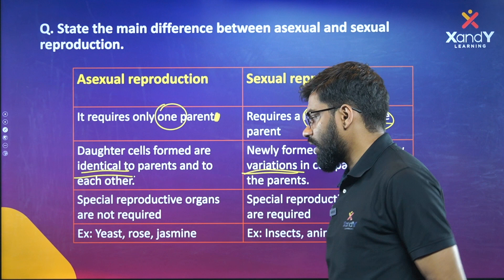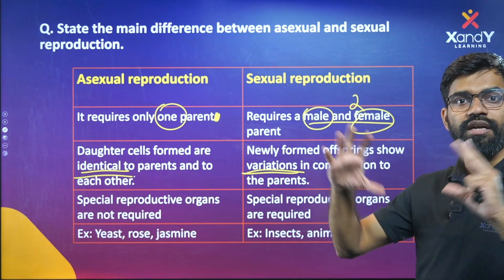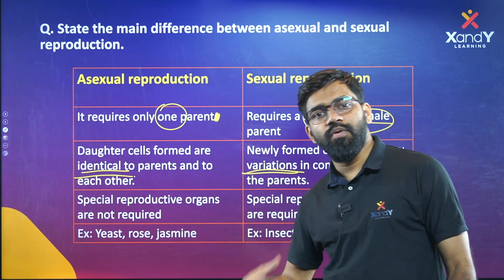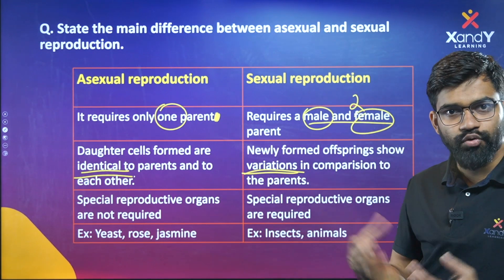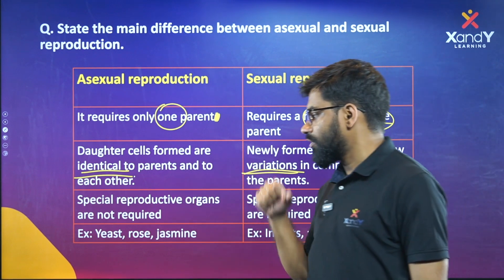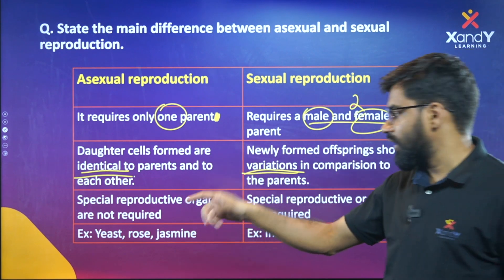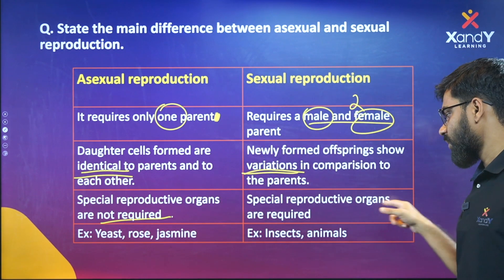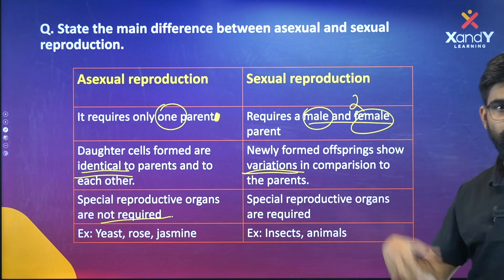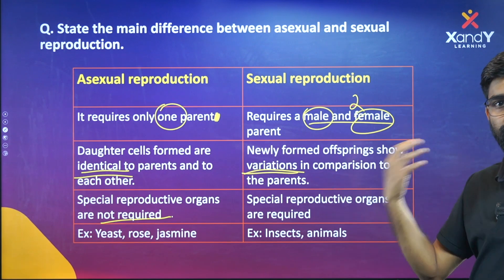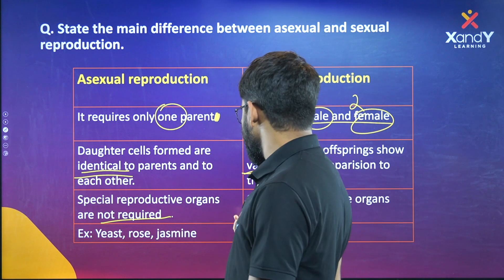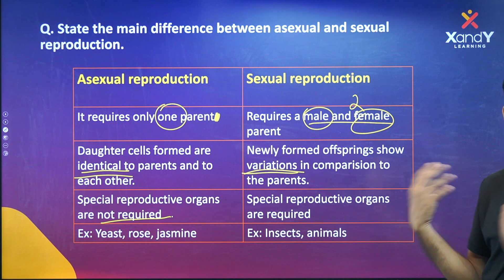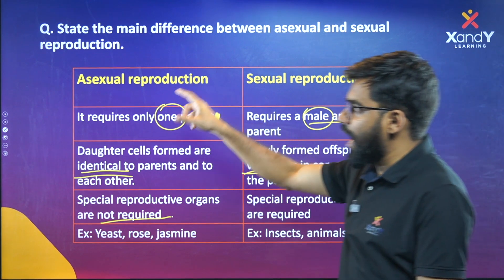Special reproductive organs are not required in asexual reproduction. In sexual reproduction, special reproductive organs such as a pistil and a carpel are required.